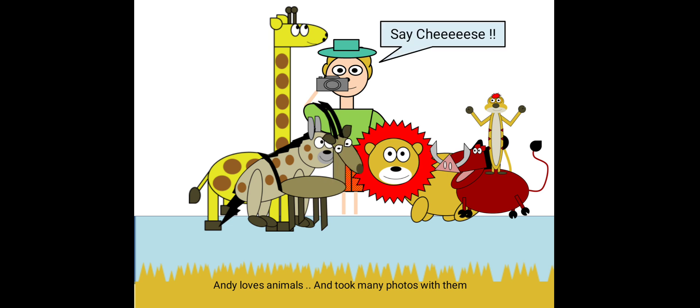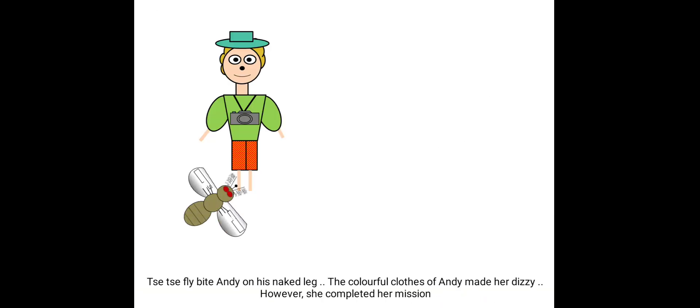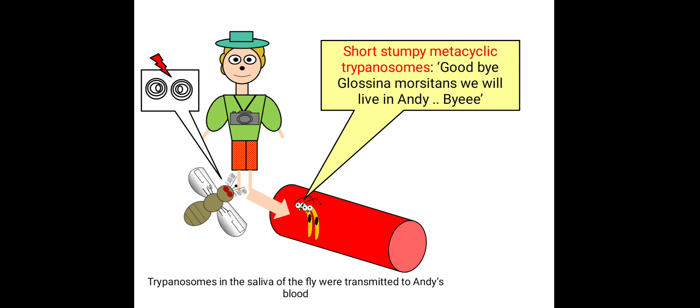And they took many photos with them. During this time, evil Tsetse fly, which is called Glossina, was watching Andy and ready to taste his blood. Tsetse fly bite Andy on his naked leg. The colorful clothes of Andy made her dizzy, however she completed her mission. Trypanosomes in the saliva of the fly were transmitted to Andy's blood in the form of short stumpy metacyclic trypanosomes and they started to multiply.